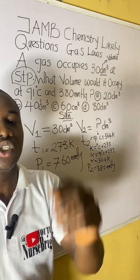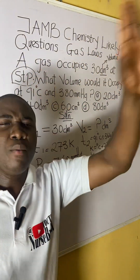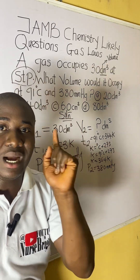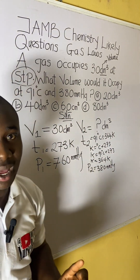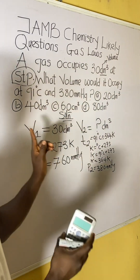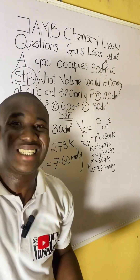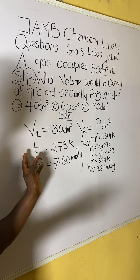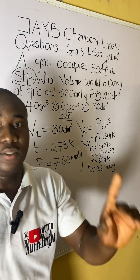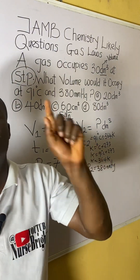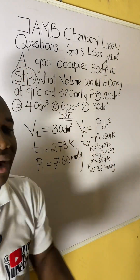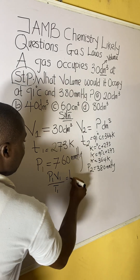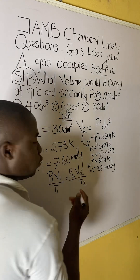Now we ask ourselves: which formula do we use? The gas law that relates all three parameters — volume, temperature, and pressure — together is called the general gas equation. We use this because we have all three parameters present. Other gas laws like Boyle's Law or Charles' Law only relate two parameters, but here we need the general gas equation.